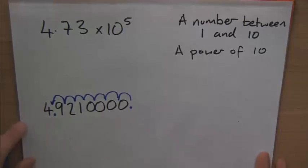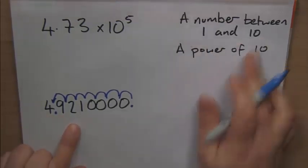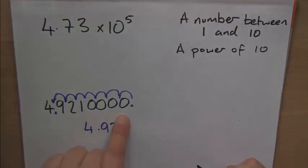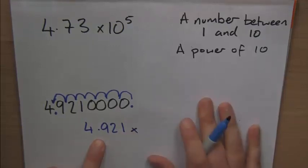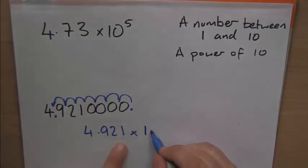And that's the key to writing this in standard form. We take this number that's now between 1 and 10, 4.921. We don't need the extra zeros because we're after a decimal point. We then put the times sign in, and it's 10 to the power of something, and the power is going to be the number of jumps that we've had.